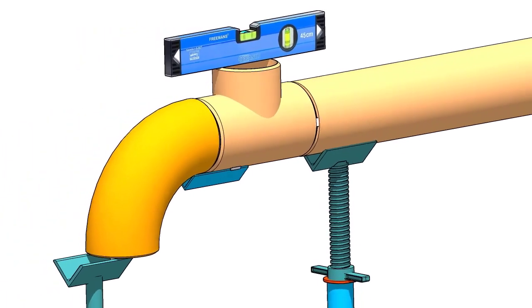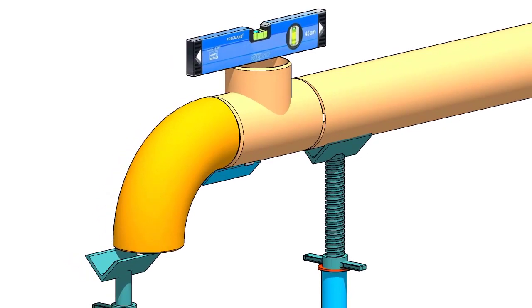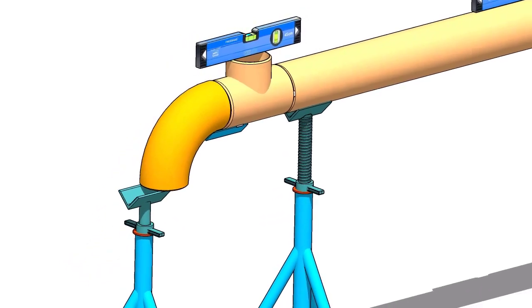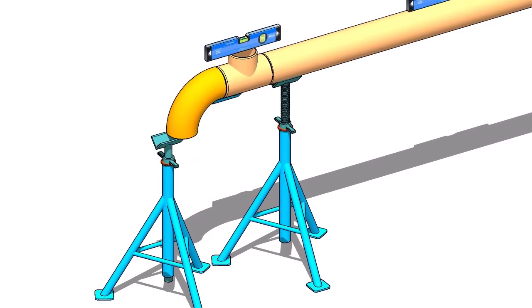Put the elbow on the angle cleat. Provide proper support at the lower face of the elbow, or else it will fall down. Put the gap rod between the joint.